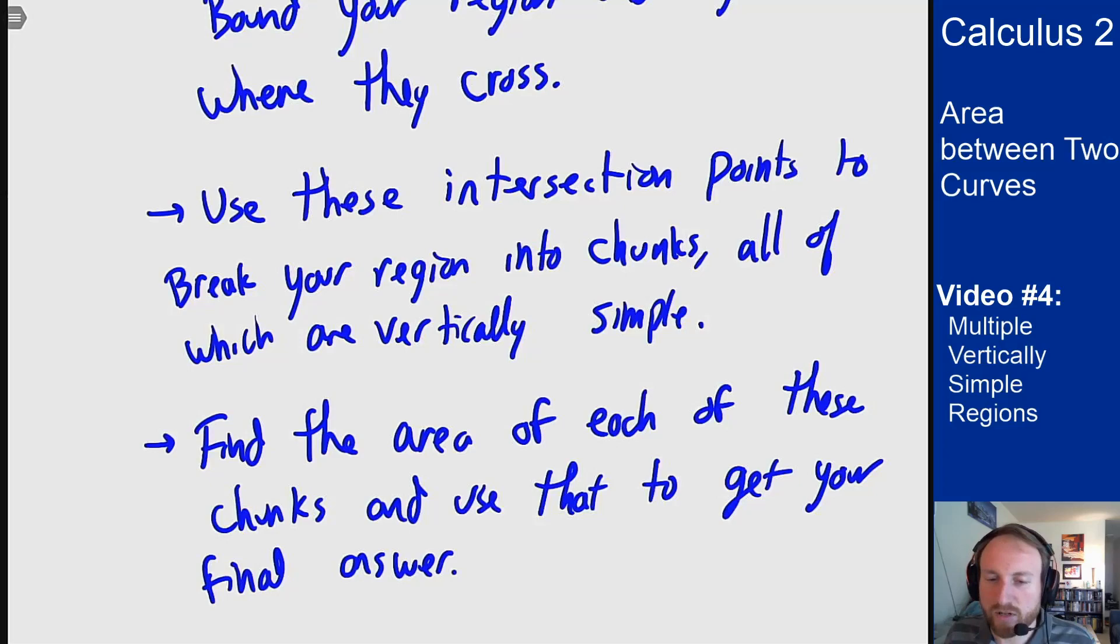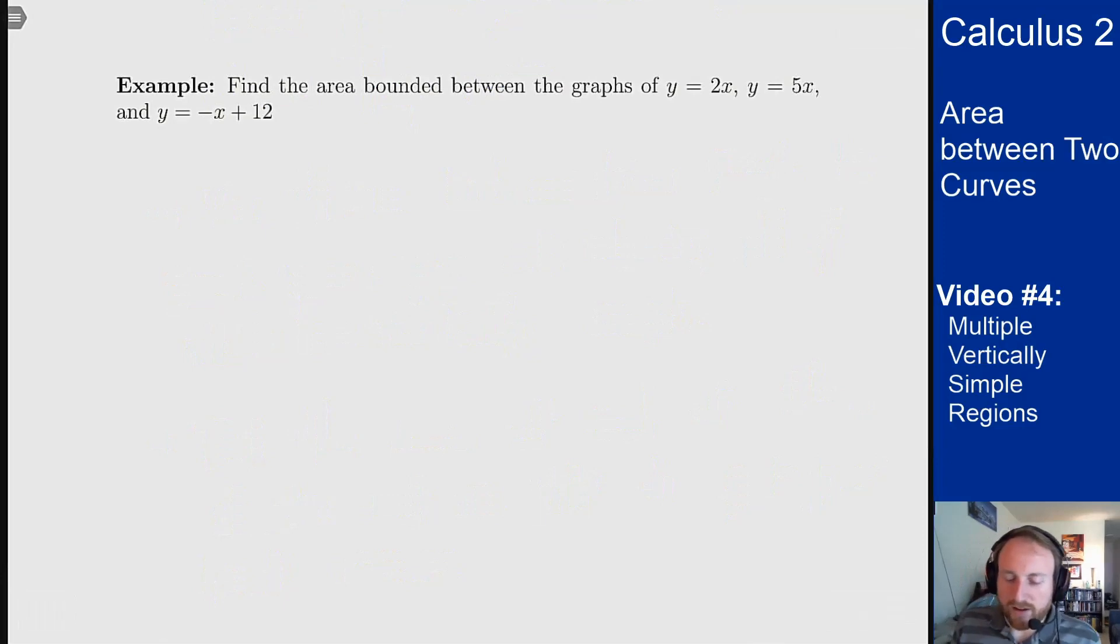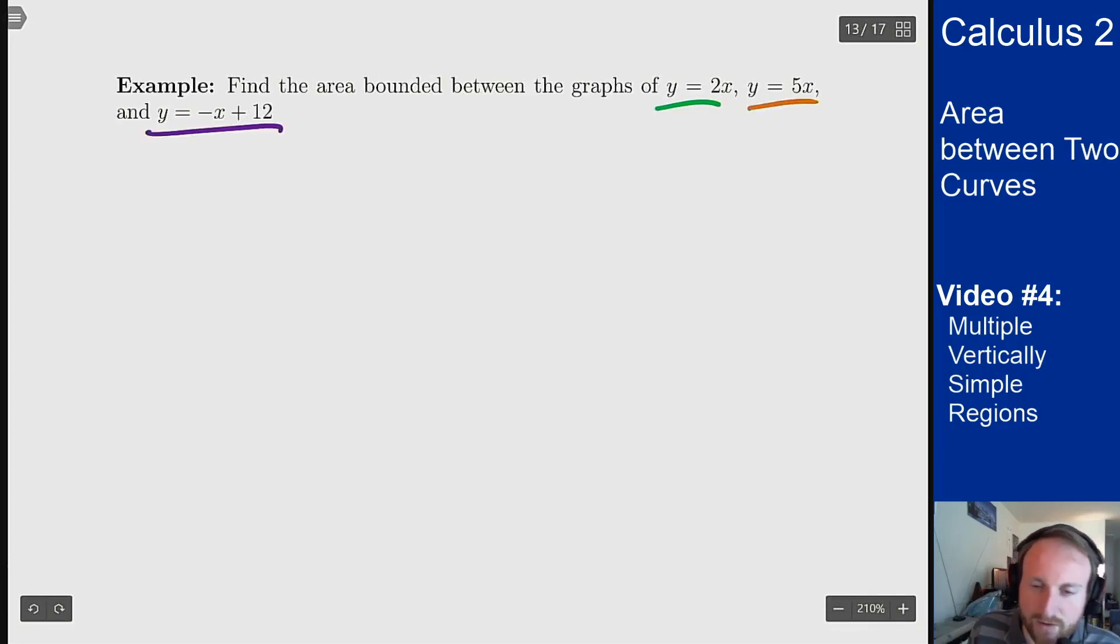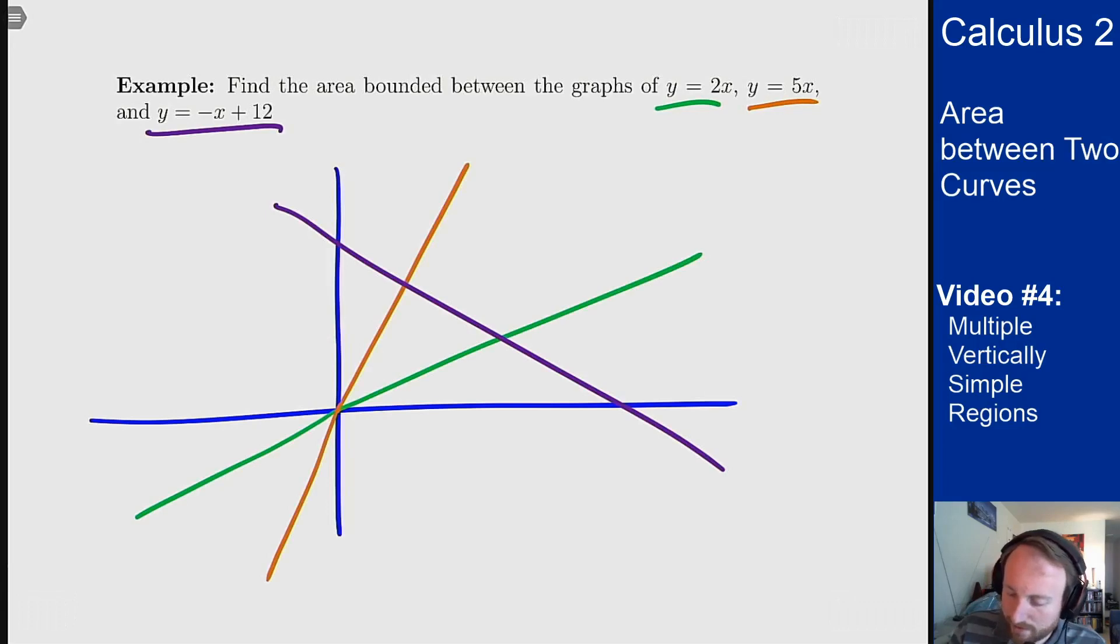So let's see an example of how this works, and you can see how it all comes together to give you an area of a region that you wouldn't be able to find by just one integral before. So find the area by the graphs of y equals 2x, y equals 5x, and y equals minus x plus 12. So this is going to be three lines, two with a positive slope that go through the origin, and then one with a negative slope that has a higher intercept. So the graph is something like this, and I want to find the area of this region in here. Now note that this is not vertically simple.